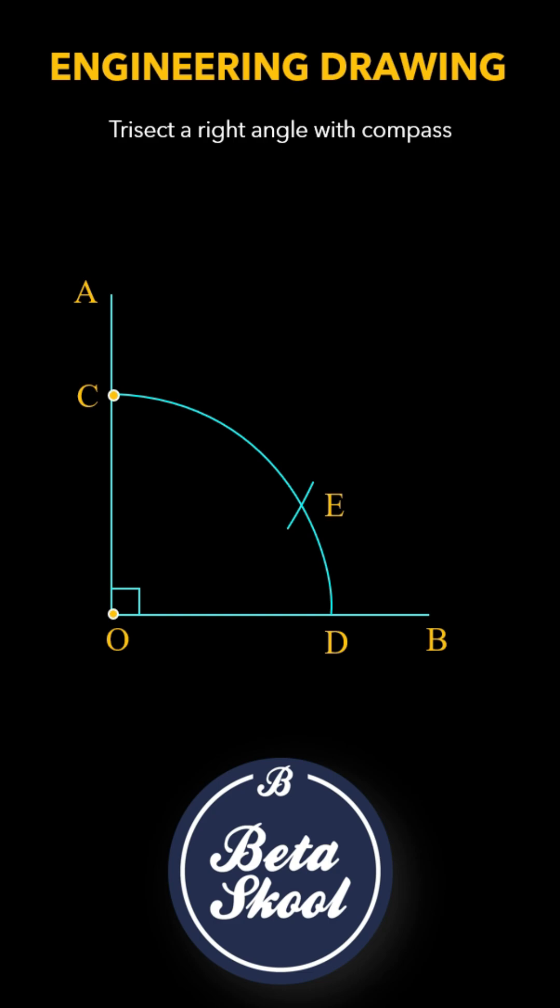Next, shift the compass to point D and mark an arc at point F. Join OE and OF.